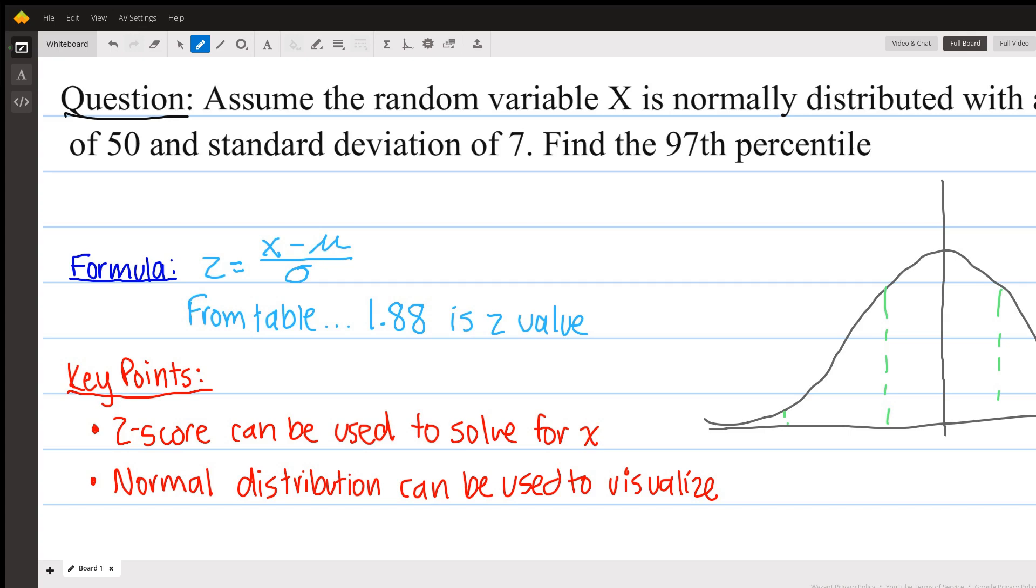So in order to find the 97th percentile, we're going to use this formula where z is the z value. This is going to be the mean and this is going to be the standard deviation.